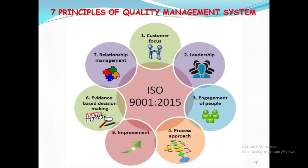Let's see the seven main principles of QMS. The first principle is that the organization should be customer focused. Next is committed leadership. Third is effective engagement of people. Fourth is proper process approach. Fifth is aim for continual improvement. Sixth is evidence-based decision making for controlling non-conformities. Seventh is relationship management with other stakeholders and neighborhood for sustaining the business.